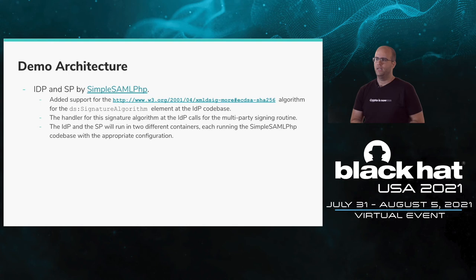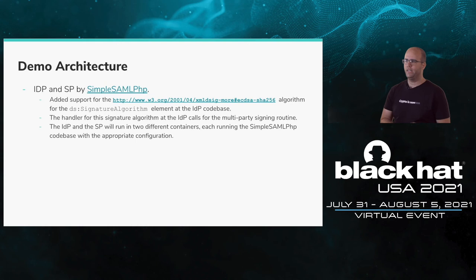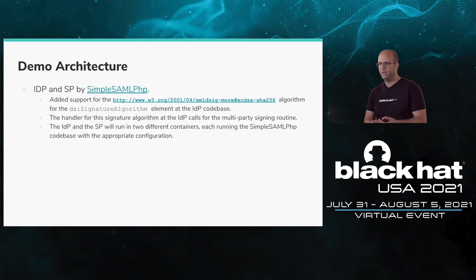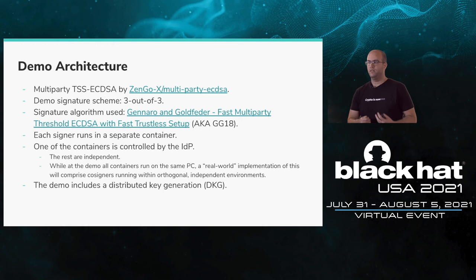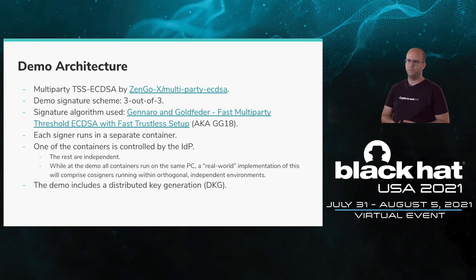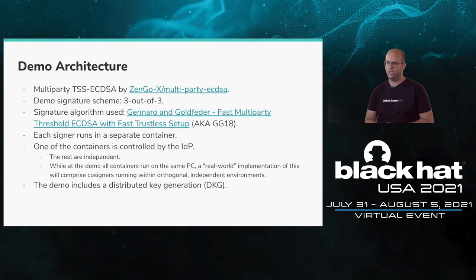The IDP and SP run in two different containers, each running its own copy of the SimpleSAMLphp codebase with its appropriate configuration. The threshold signature EC-DSA implementation was contributed by the ZengoX team on GitHub — you can check it out. More specifically, we use a three-out-of-three signature scheme in our demo, using the scheme by Gennaro and Goldfeder, known as GG18. In our demo, each signer in the threshold signature scheme runs on a separate container, and one of those co-signer containers is controlled by the IDP. The rest are assumed to be independent, adding value to the orthogonality measure.